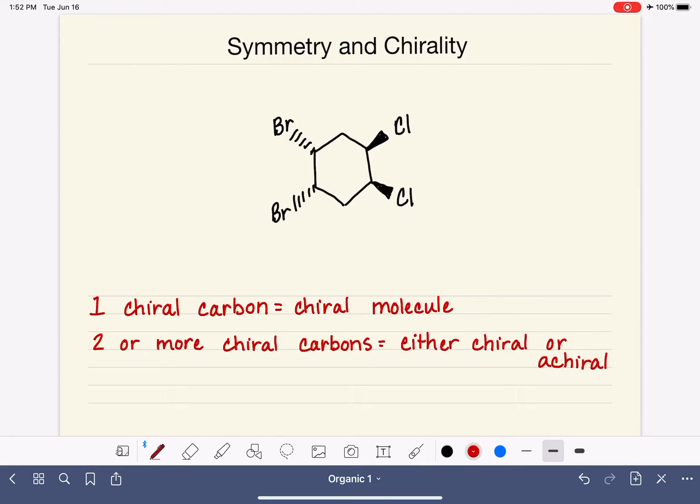In order to determine the status, chiral or achiral, of the molecule, you have to look at the molecule and look for a plane of symmetry. If a molecule has a plane of symmetry, that molecule is always achiral.